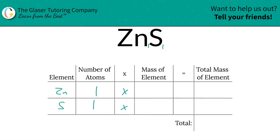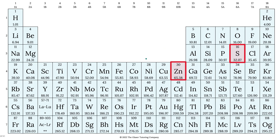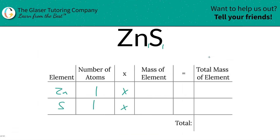Then we're simply going to take those number of atoms and multiply it by the mass of each element from the periodic table. Zinc's mass is going to be 65.38. Sulfur is going to be 32.07. Let's write them in. So zinc is 65.38, and sulfur is 32.07.